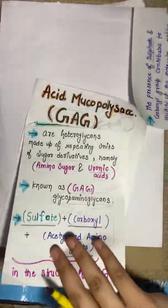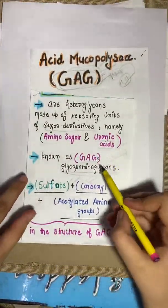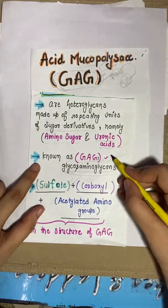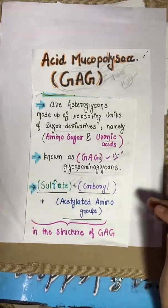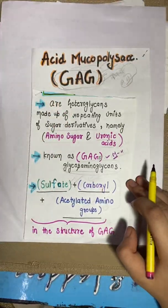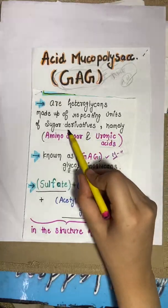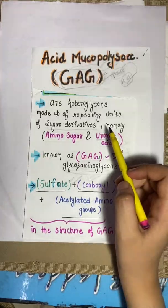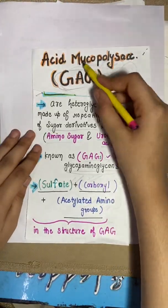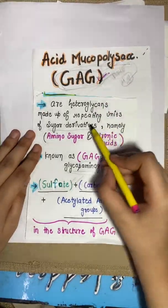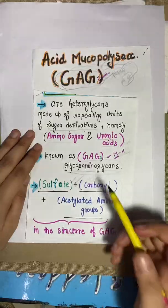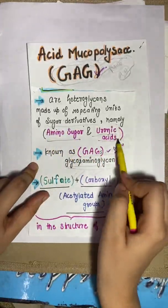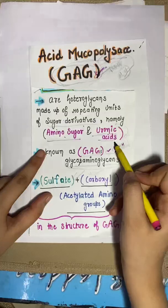GAG stands for glycosaminoglycan. It is a mucopolysaccharide, which is a heteropolysaccharide — a heteroglycan. GAGs are made of sugar derivatives in repeating units. The two sugar derivatives present are amino sugar and uronic acid. These two components make up GAG.